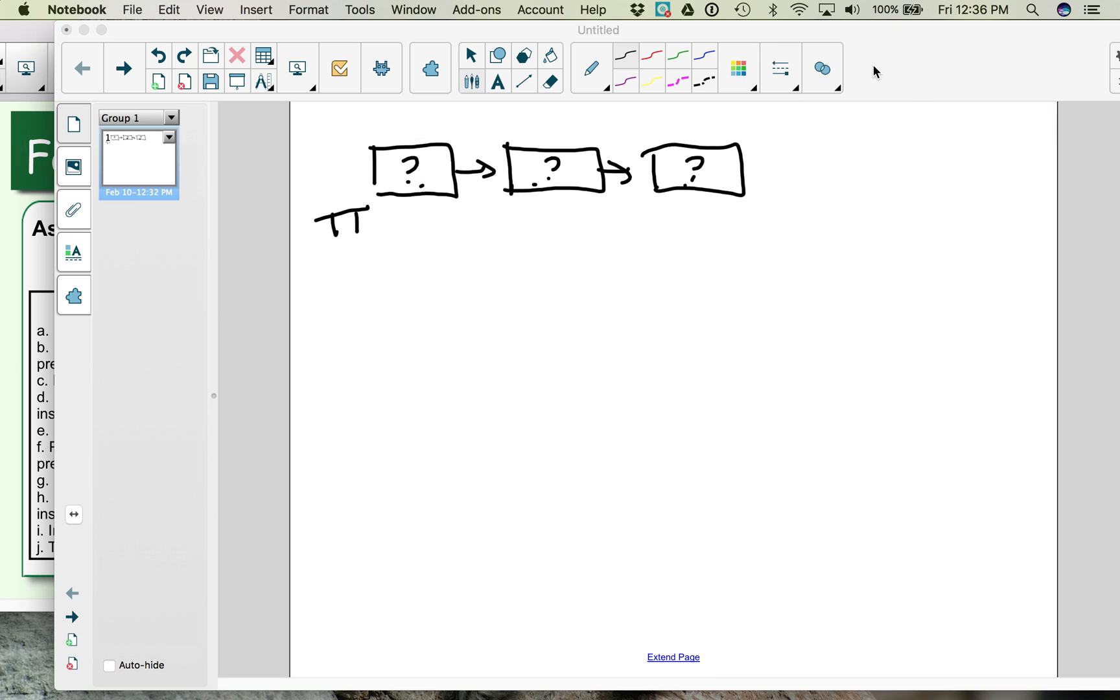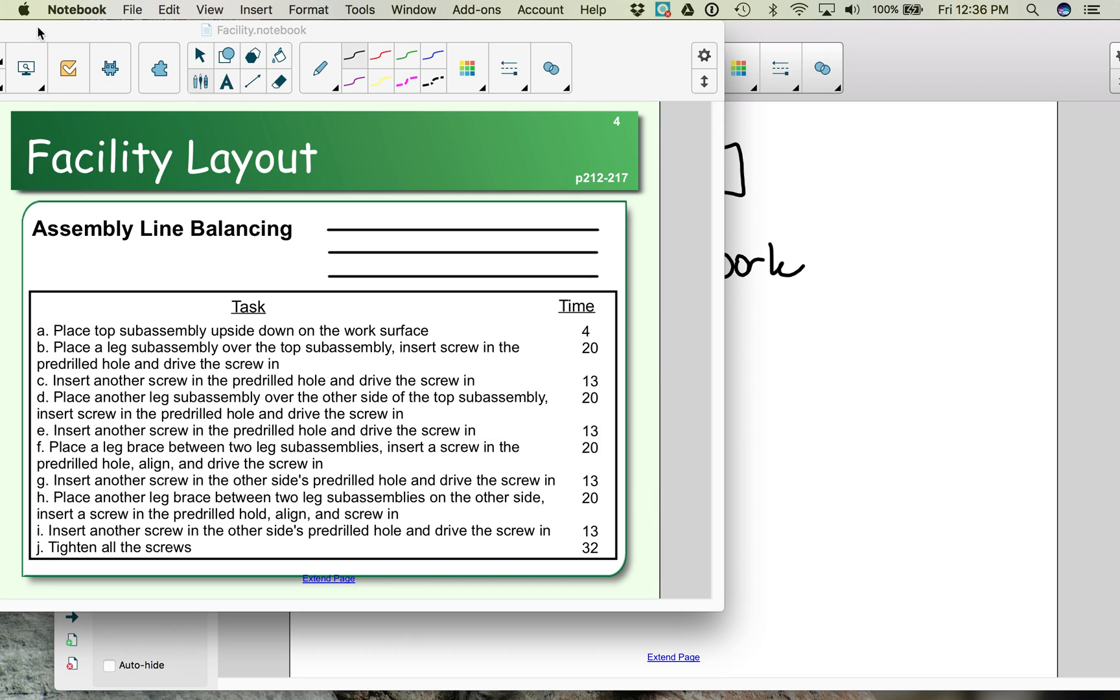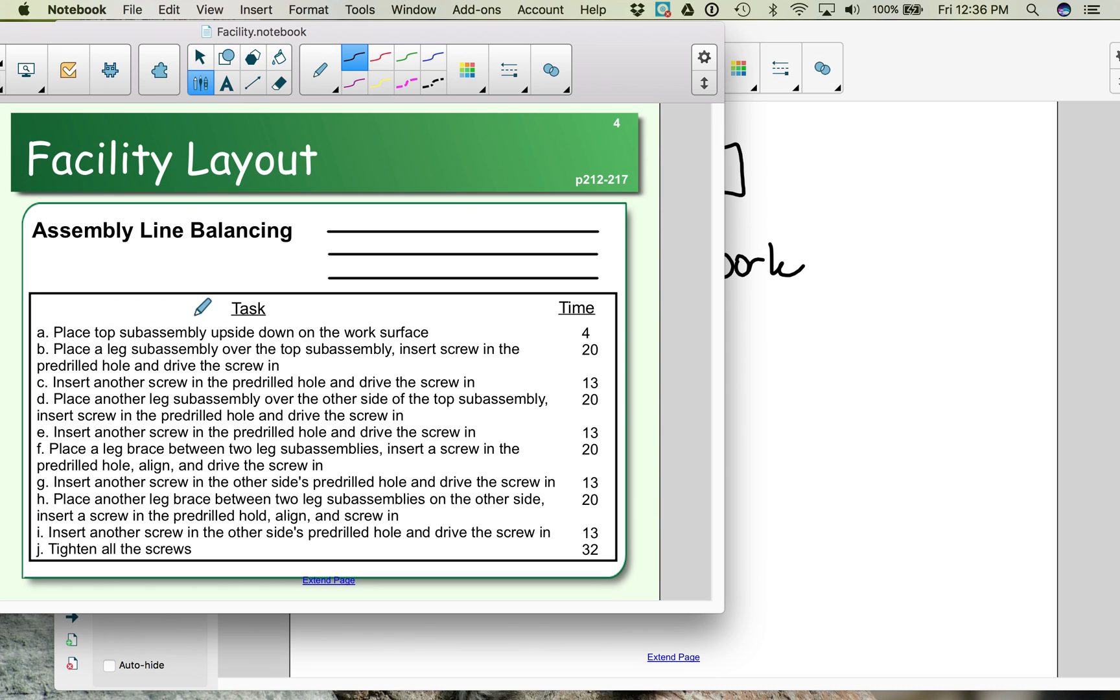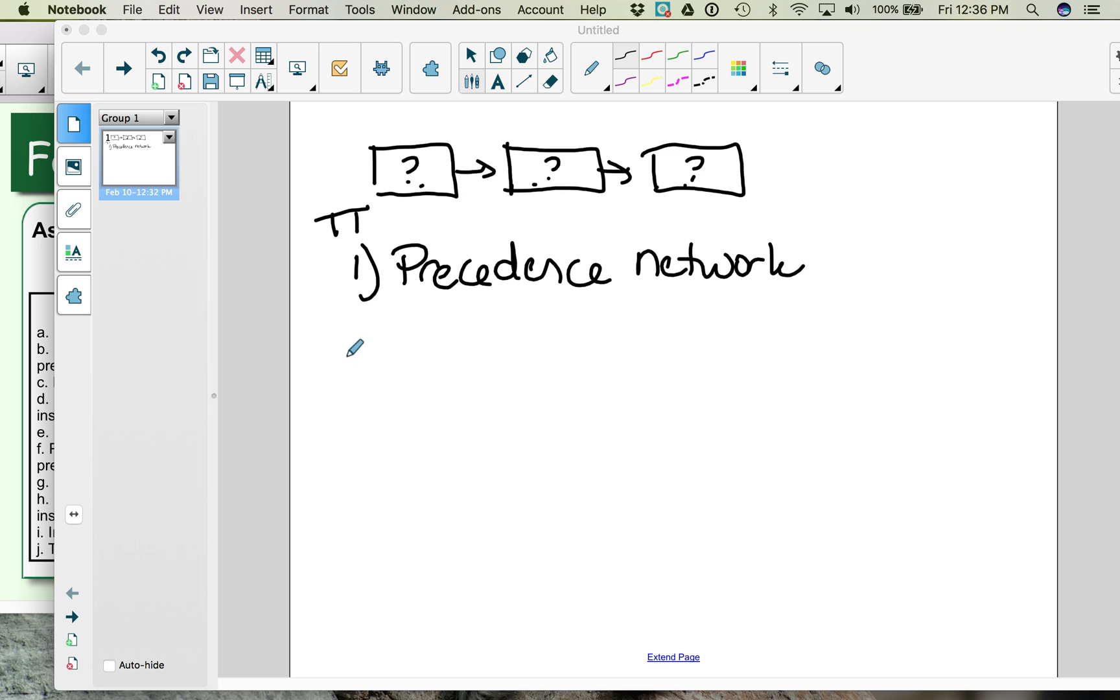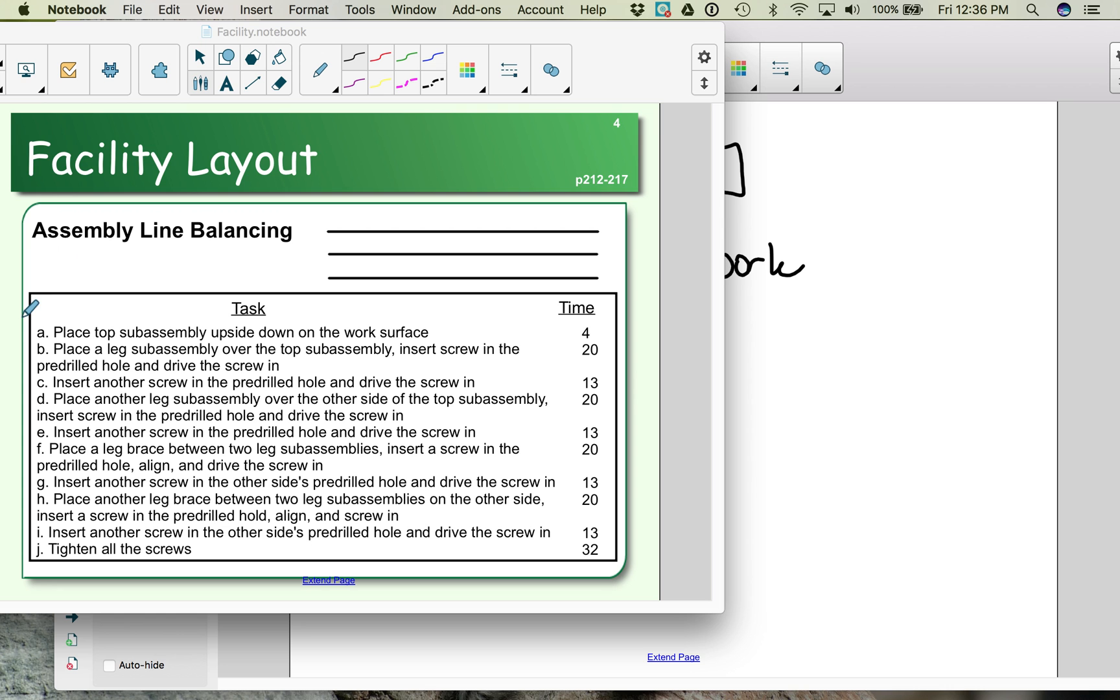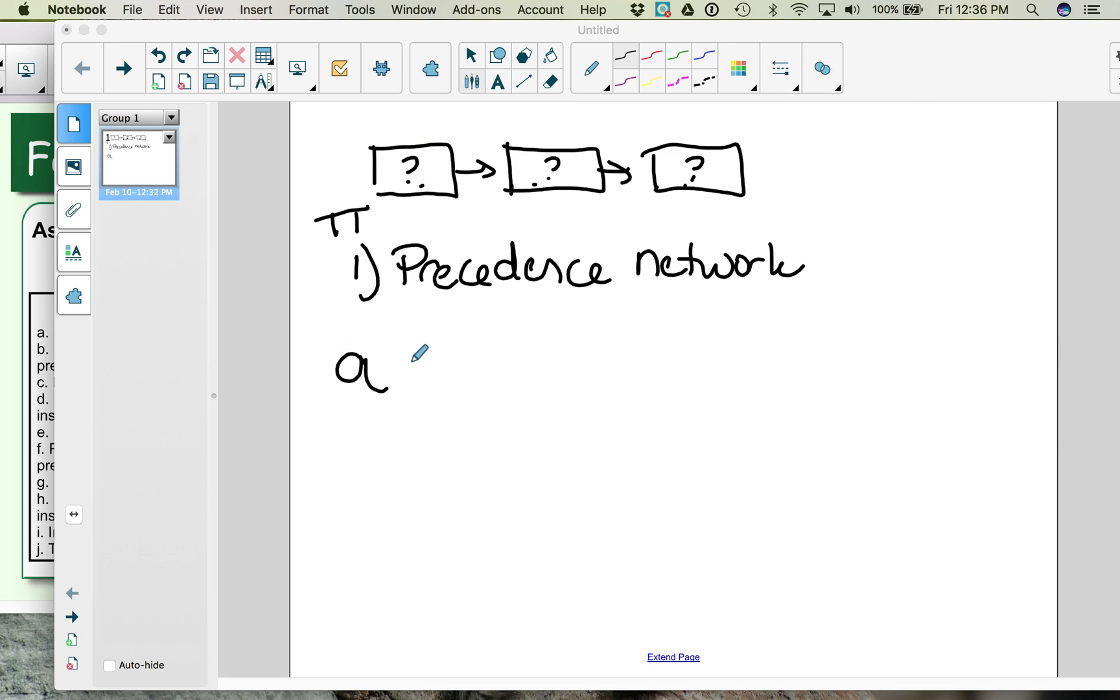Now, when we do assembly line balancing, the first step in your assembly line balancing is to create a precedence network. This looks at the order of your operation, similar to your process flow diagram. But here we are identifying the relationship between the activities. So as we look at our table example here, we recognize that first thing we need to do is flip over the tabletop. That's going to be the first thing in our precedence network. Then we're going to place a leg subassembly onto the top of that table. So activity B must come after activity A.